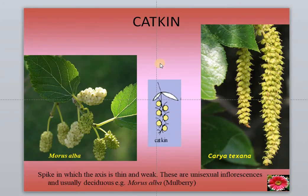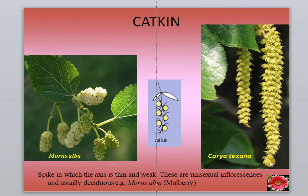This is called a catkin. You know the mulberry plant — mulberry is also an example of catkin. Here sessile flowers are arranged and it is pendulously arranged. Smaller flowers are on the tip and older flowers are towards the base.